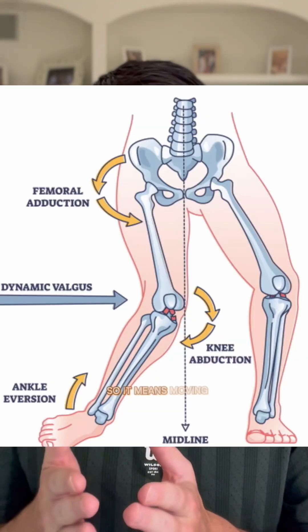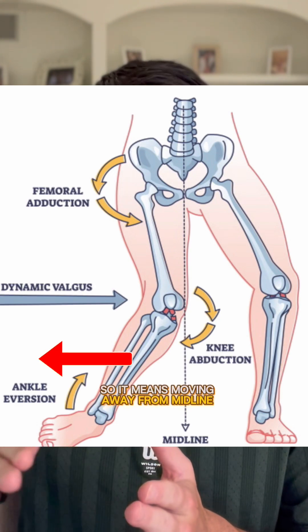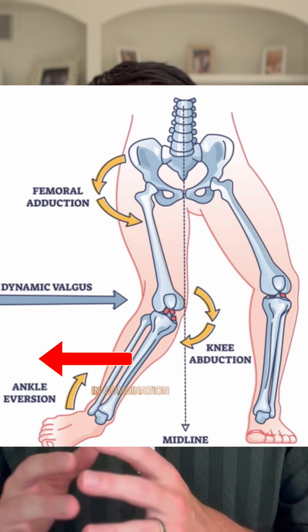Firstly, when we look at what's considered the tibia, or the shin bone, that tibia is actually what we consider to be abducted — meaning moving away from midline. In combination with that, we look at what's going on at the hip.